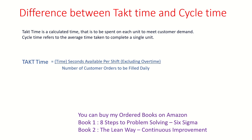Takt time is equal to time in seconds available per shift, excluding overtime — that's very important — divided by the number of customer orders to be filled daily.